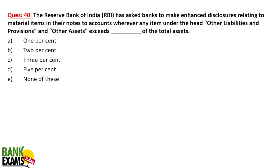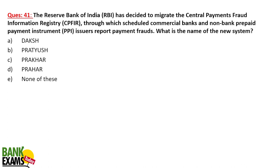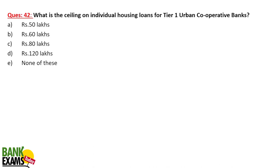RBI has asked banks to make enhanced disclosures related to material items in their notes to accounts. Wherever any item under the head 'other liabilities and provisions' or 'other assets' exceeds 1% of the total assets, additional disclosure is required. RBI has also decided to migrate the Central Payment Fraud Information Registry (CPFIR) to a new platform called DAKSH, through which scheduled commercial banks and PPIs can report payment fraud.